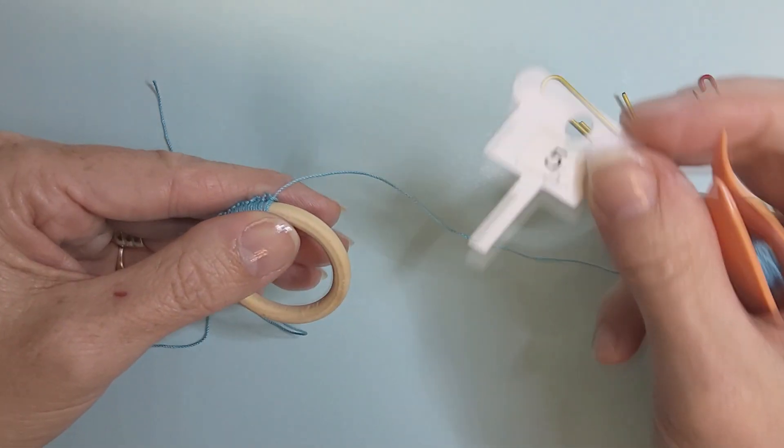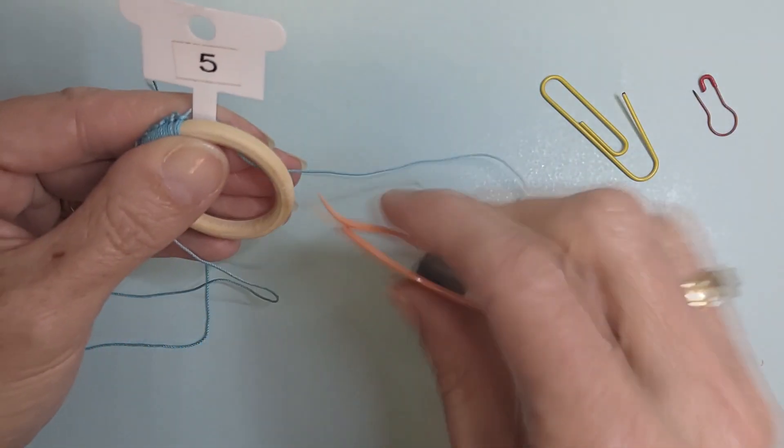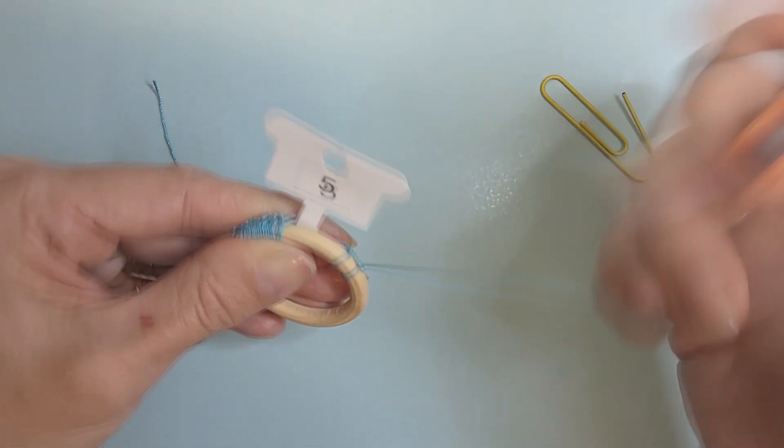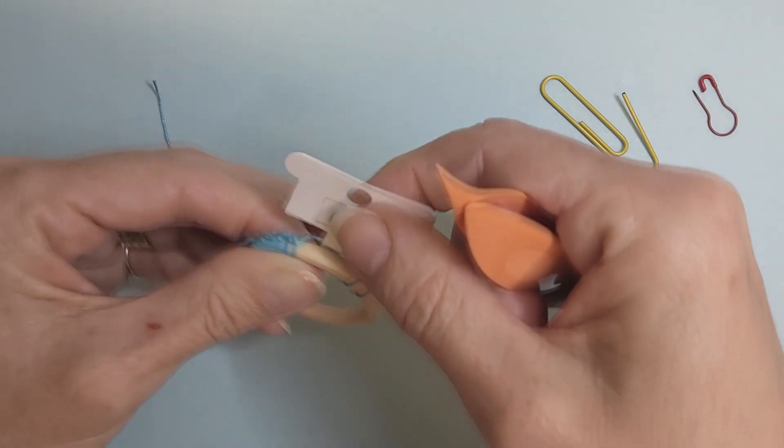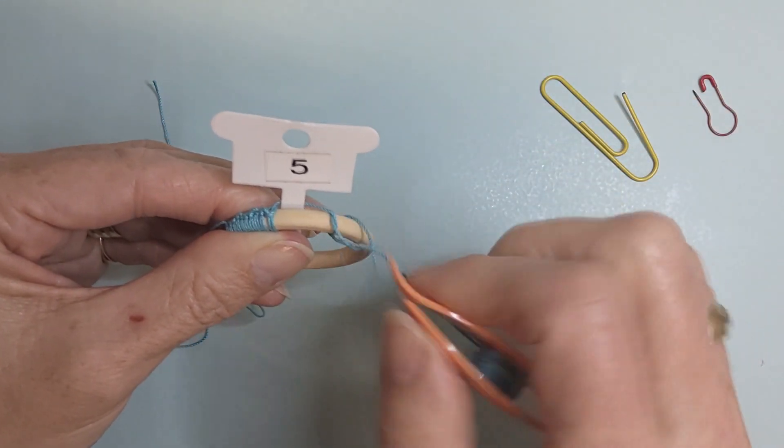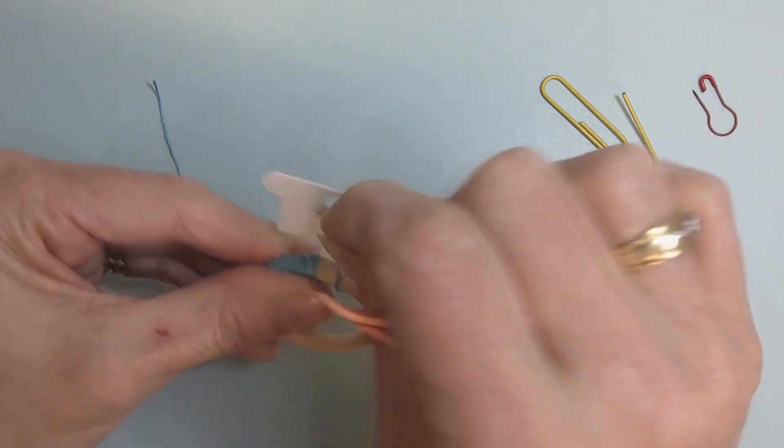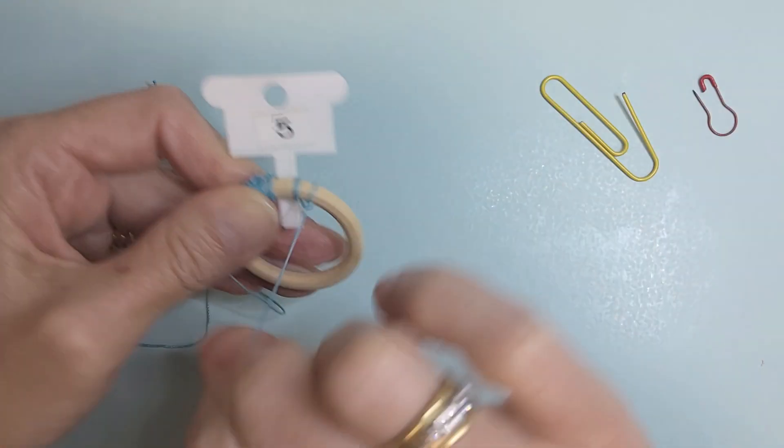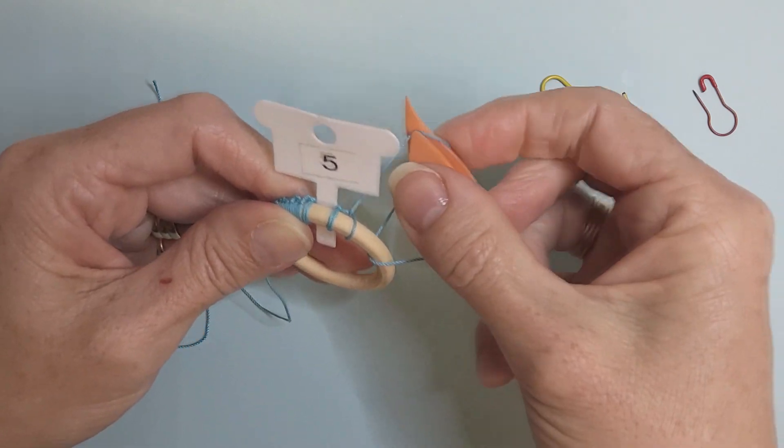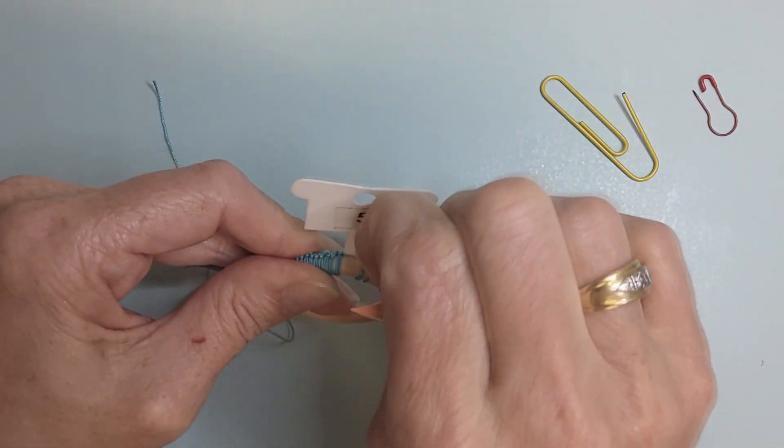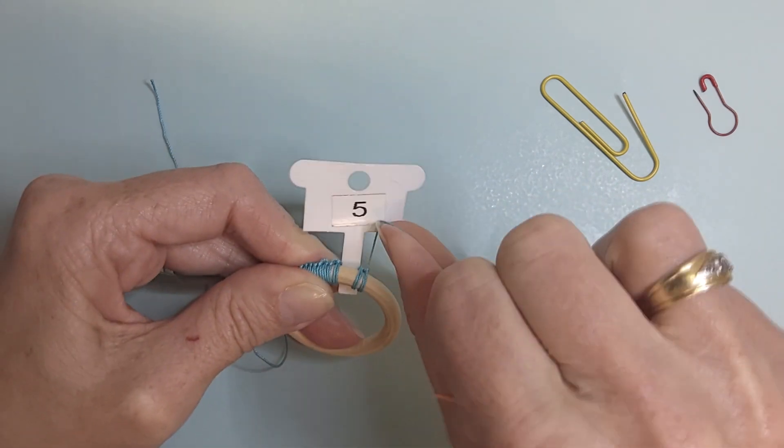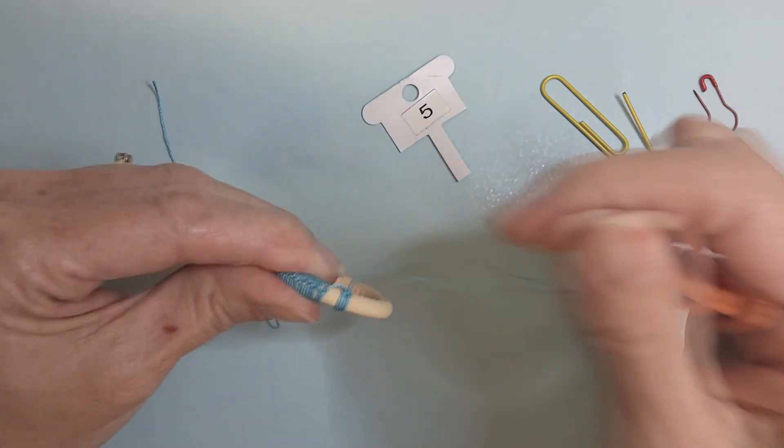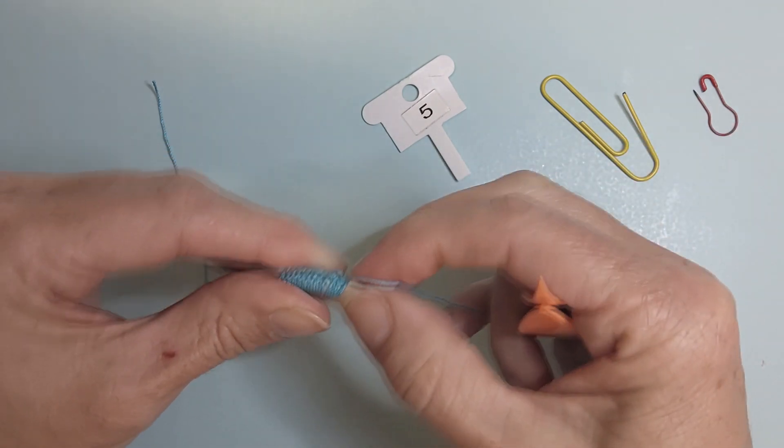If you want to use a gauge for your picots, hold the gauge behind the ring as you work the stitch. Pull the stitch up. And I want to work a second stitch just to help secure that before I pull the gauge out. The stitches tend to loosen up around the cabone ring, which is why I'm saying to pull them pretty tight.